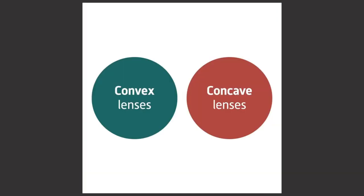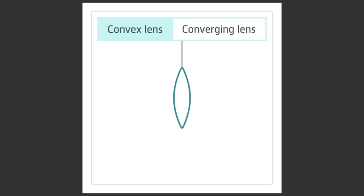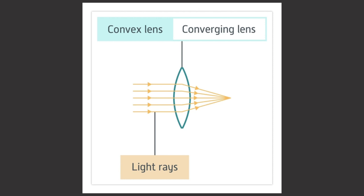In this pod we're going to investigate the images in convex and concave lenses. A convex lens, also known as a converging lens, is curved outwards on both sides. Light rays passing through it come together — they converge, they meet.